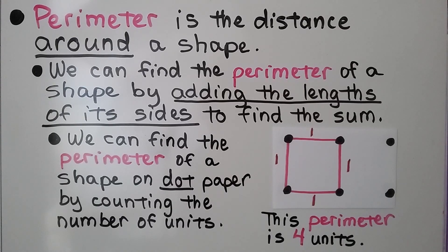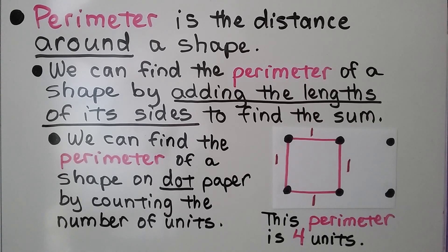Perimeter is the distance around a shape. We can find the perimeter of a shape by adding the lengths of its sides to find the sum.